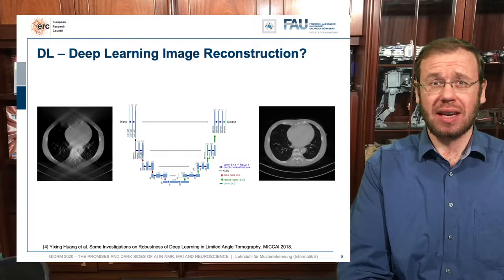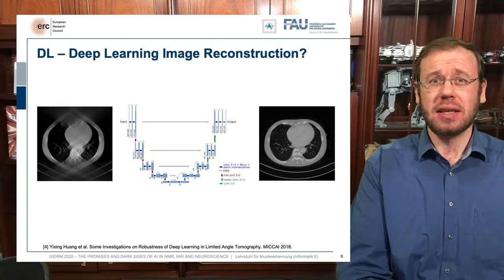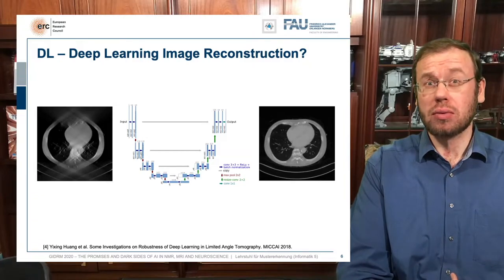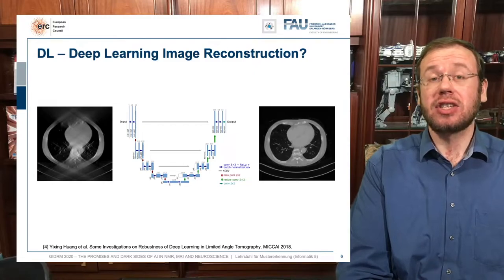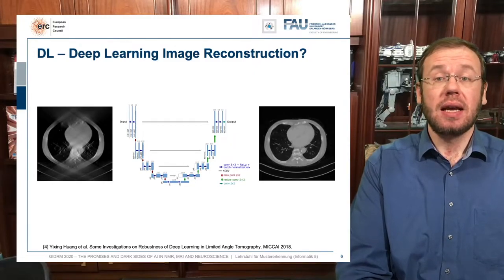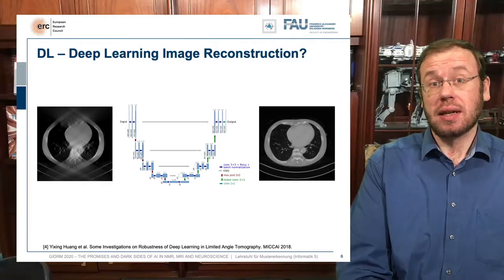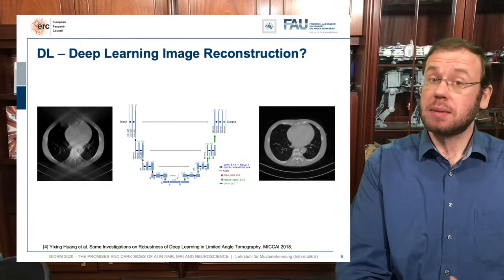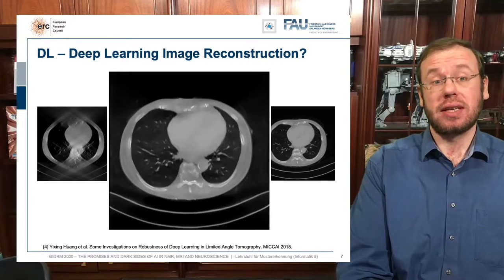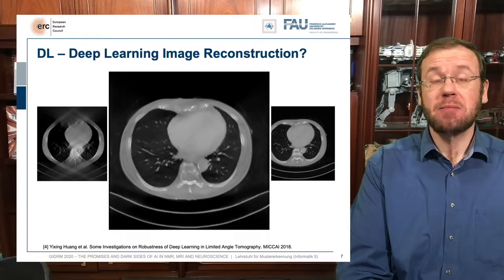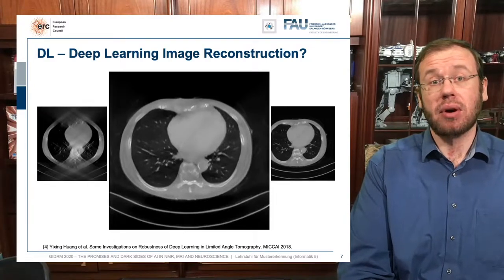Here is an example of a limited angle scan, which occurs if you are not able to rotate around the entire patient. The intent is to do a partial reconstruction, pass it to U-Net, and generate an artifact-free image. Surprisingly, if you take the input image and train on a specific anatomy — without ever having seen that specific patient — you can generate images where the missing data is completed very nicely and it looks almost like a perfect reconstruction.